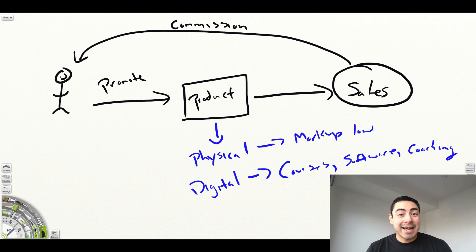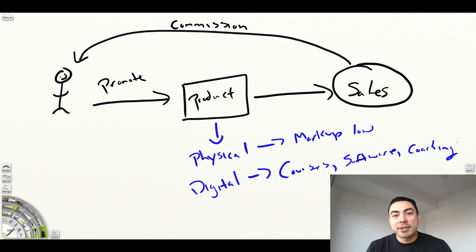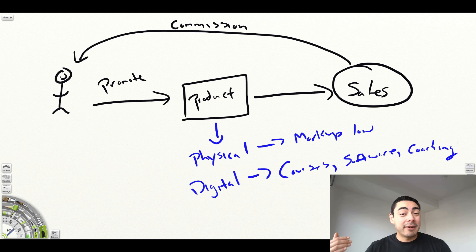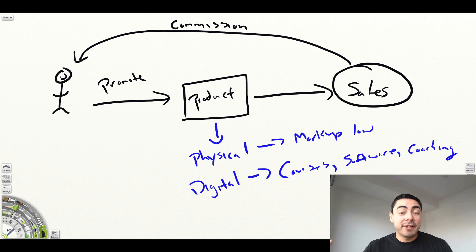Digital products are mainly information products like courses or coaching, or software that helps people complete specific tasks. A lot of these are high-end — courses might sell for $1,000 to $2,000, and coaching packages could be $5,000 to $10,000. That means your commission is going to be a lot higher because you're selling a much higher-level product. These are also known as high-ticket affiliate programs.